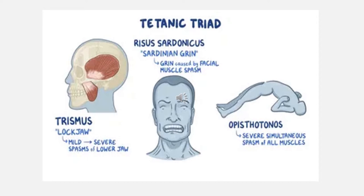There is a triad seen in all cases of tetanus in both neonates and adults, and it follows a descending pattern. First, Risus sardonicus — a grin on the face caused by facial muscle spasm. After Risus sardonicus, we see Trismus, which means lockjaw; it ranges from mild to severe with spasm of the lower jaw. After Trismus, we see Opisthotonos, which means arching of the back, with severe and simultaneous spasm of all the muscles.